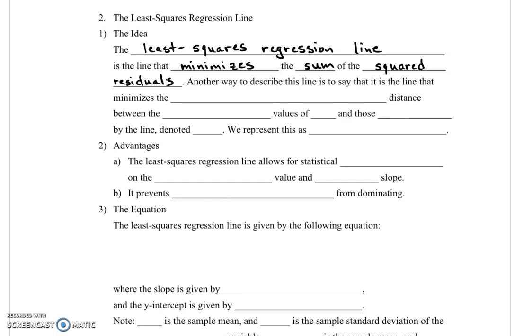We find a residual for every data point, square that value, and add them all up. And whatever line minimizes that number is the line that we want.